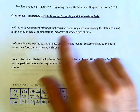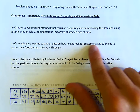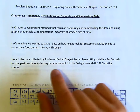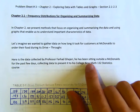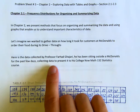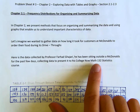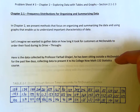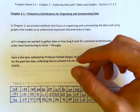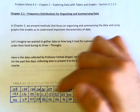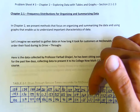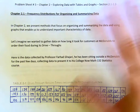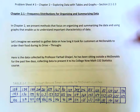Let's imagine that we wanted to gather data on how long it took for customers at McDonald's to order their food during its drive-thrus. Here is data collected by Professor Farhad Gajari — he was sitting outside of McDonald's for a few days collecting data to present to a college Math 132 Statistics course. By the way, I'm completely joking — I just made up these numbers, I did not have my binoculars, I'm not that crazy.